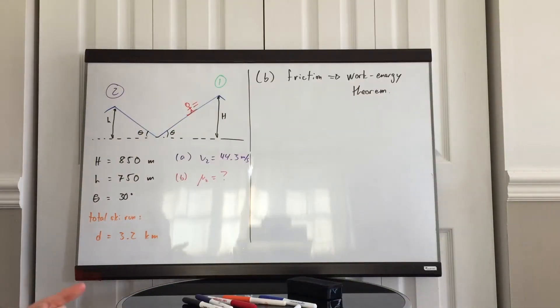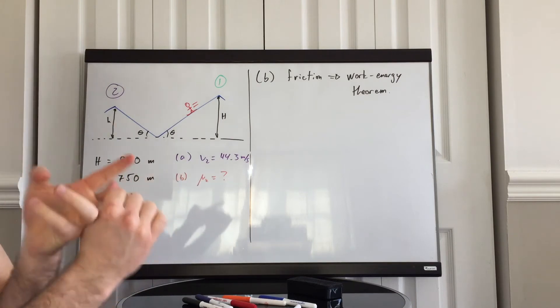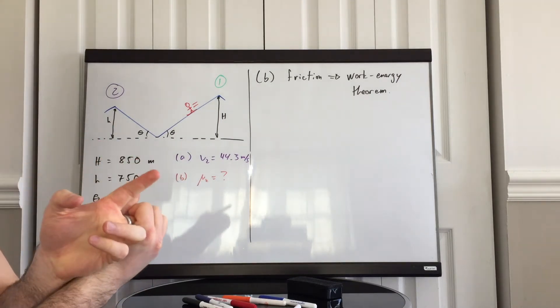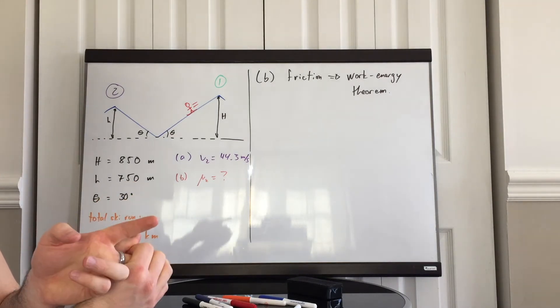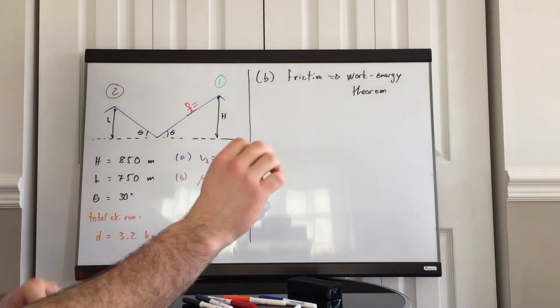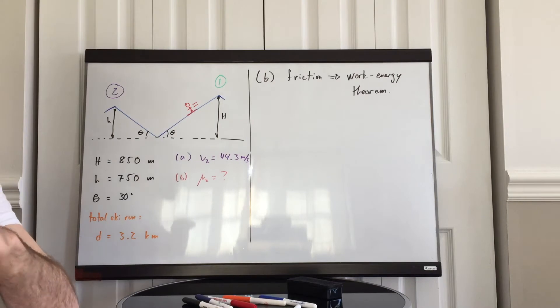So for part b we have the same setup, the same initial height, the same final height, the same total ski run. We do have friction in this case. Because of friction, a non-conservative force, it will always take out energy from the mechanical system. In this case, that's the skier.